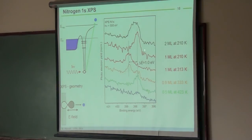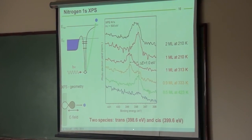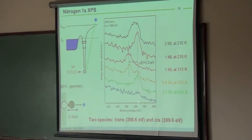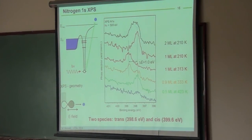Despite noisy spectra — because measuring with more statistics would damage the molecules — we clearly see two peaks. At 210 K, we see a state at binding energy around 397.6 eV. Absorbing at 300 K gives a peak shifted by about one electron volt in binding energy. These are two species: the trans species at lower binding energy and the cis species at higher binding energy. Reaching the cis species at higher temperature means you must overcome a barrier from trans to cis.